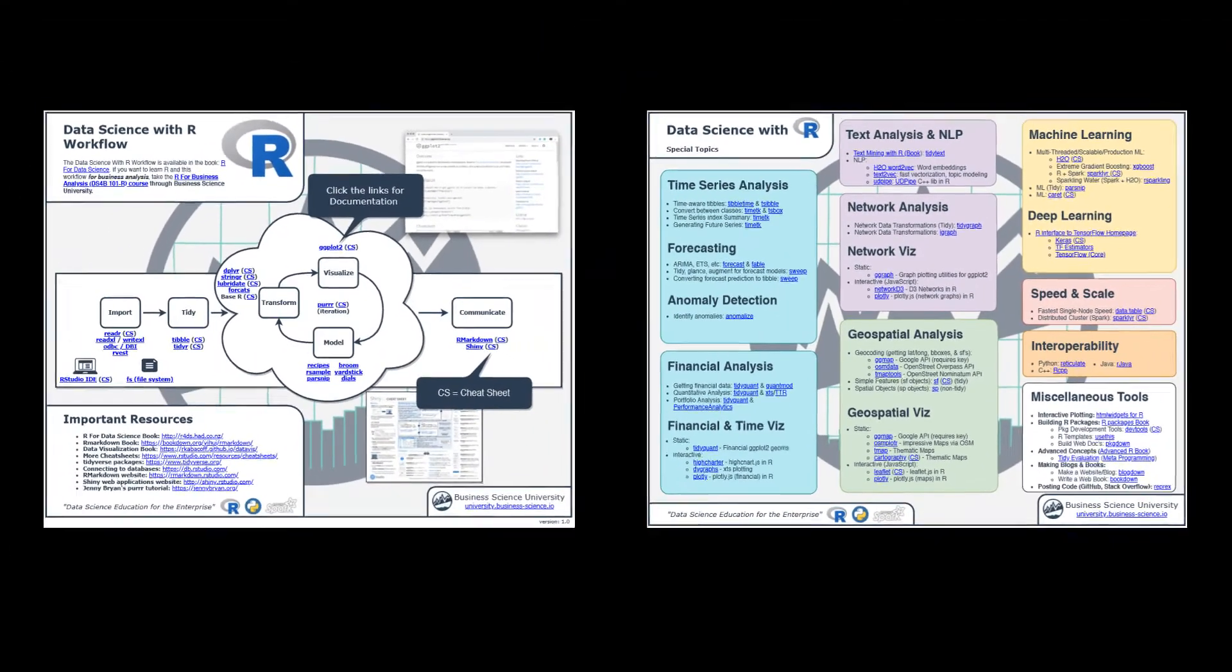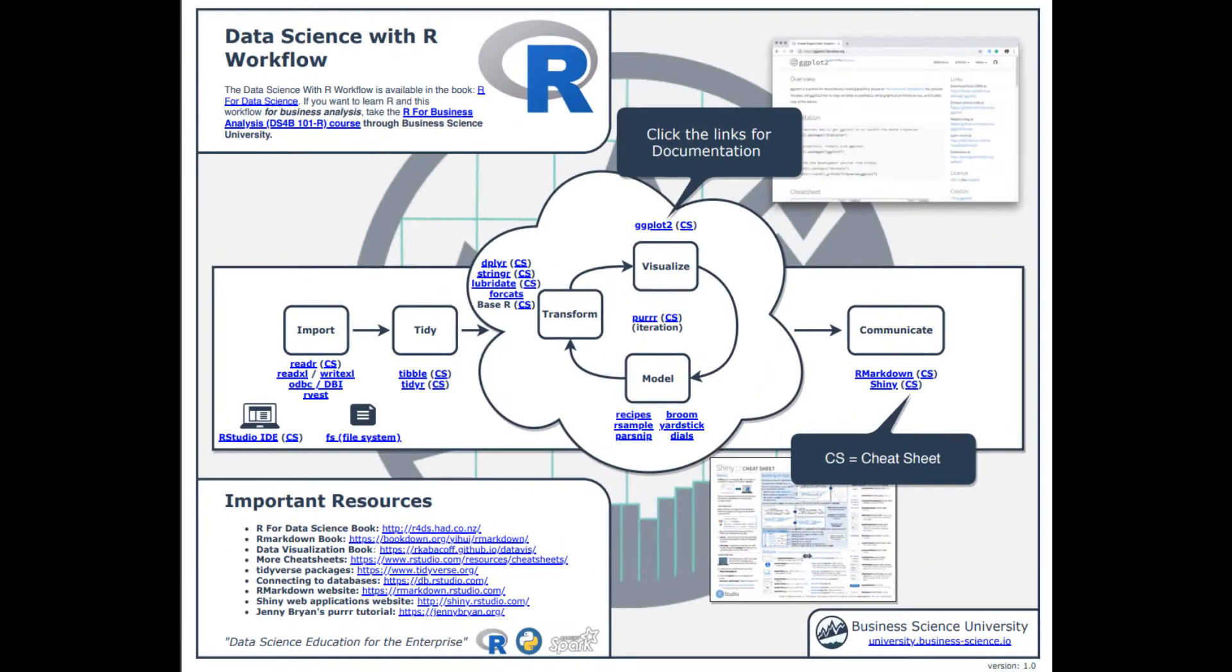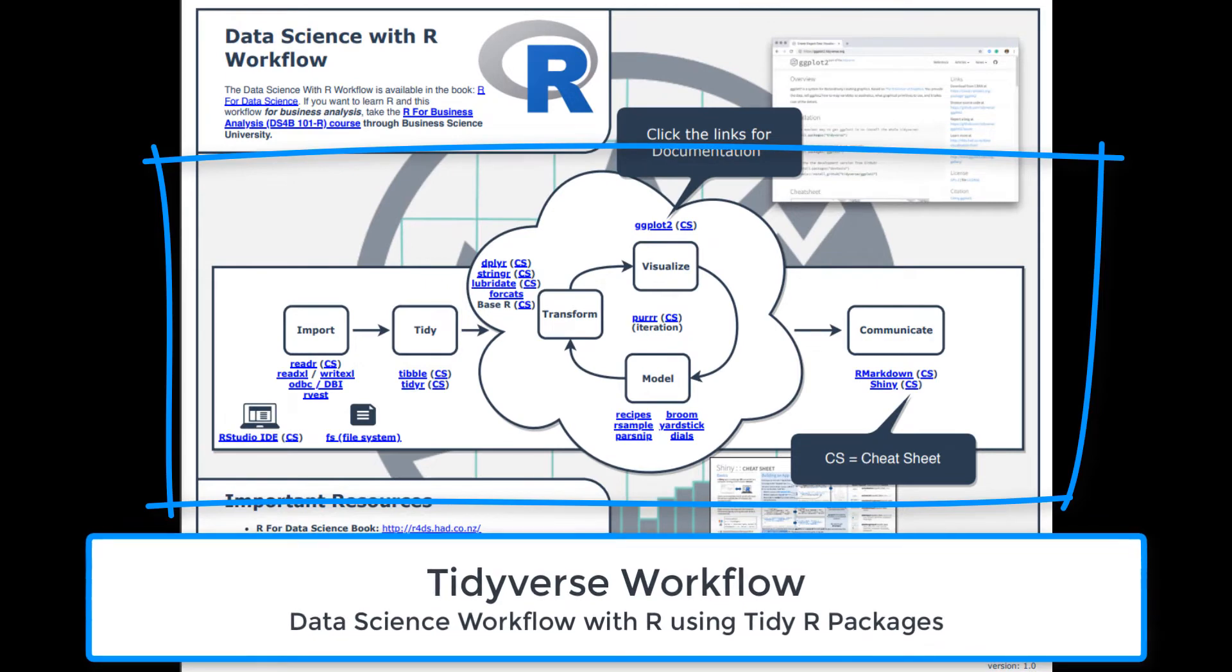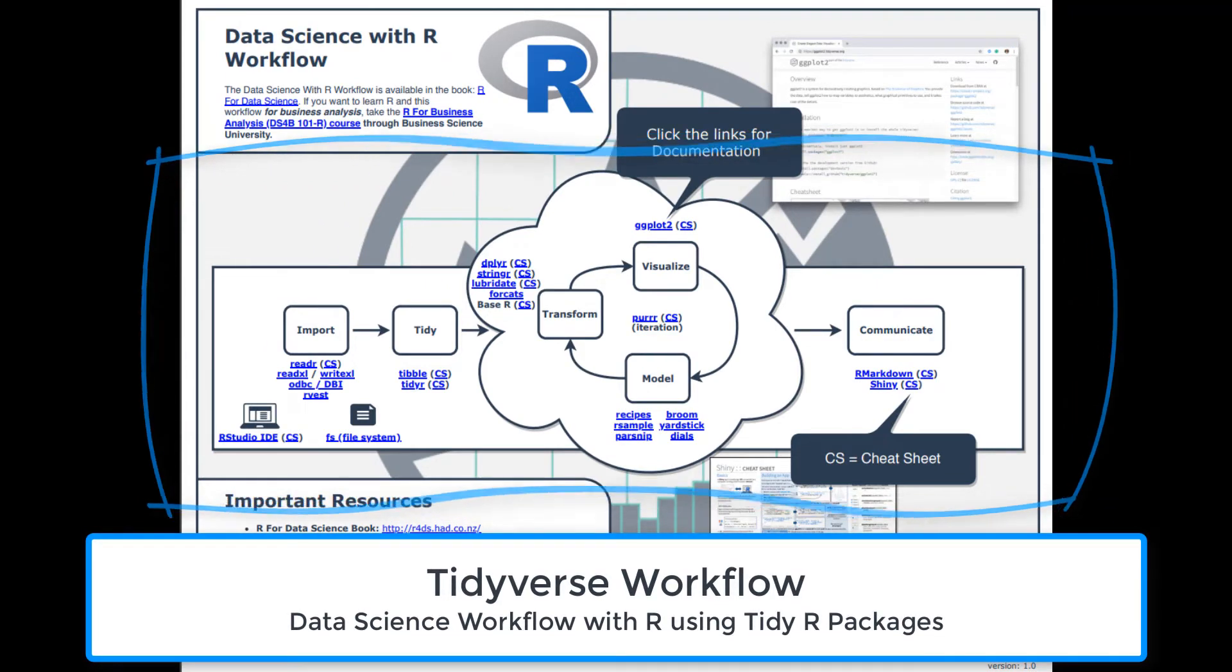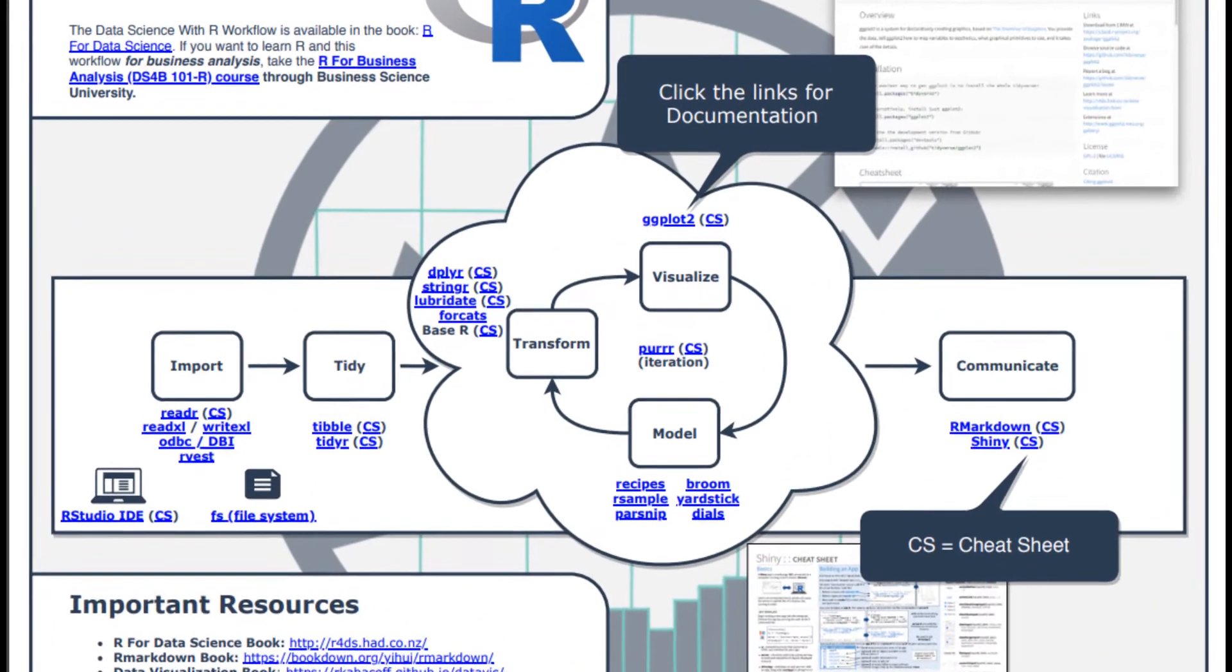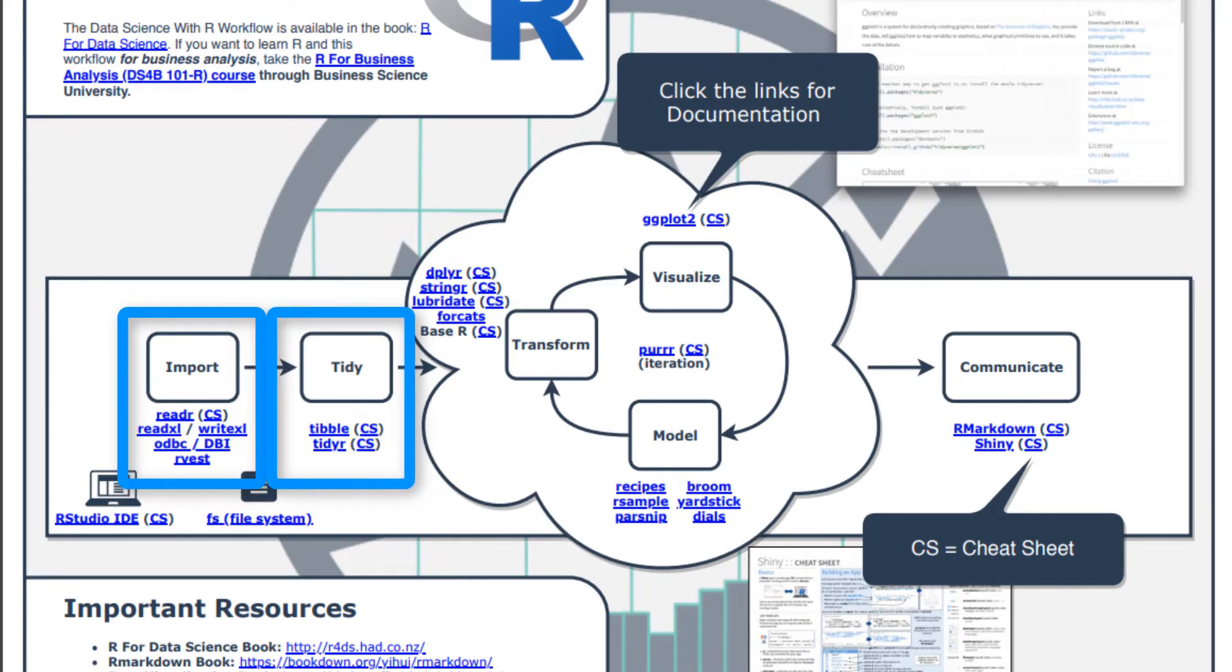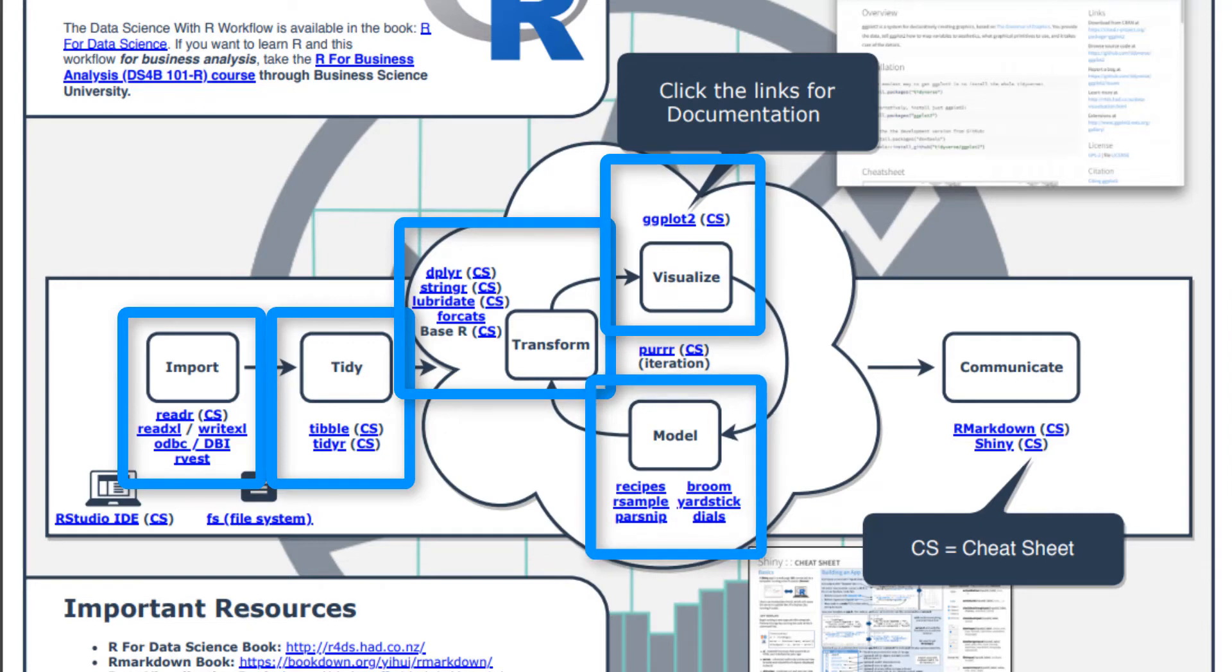This is the document, the Ultimate R Cheat Sheet. It's got two pages. The first page has the Tidyverse workflow, which is basically the workflow you'll predominantly use when doing a data analysis project. It usually starts with importing, then tidying or cleaning up and transforming, then visualizing, and then modeling. This is an iterative process, and then you communicate results, typically to your boss or management.